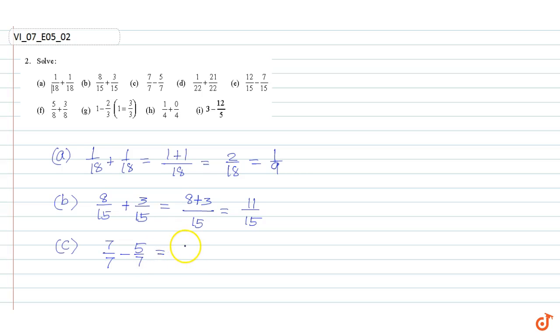Part c: 7/7 minus 5/7. Since the denominators are equal, we can write 7 minus 5 divided by 7, which is equal to 2/7.